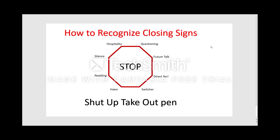You're going to use the objection triangle — covered in another video — which handles any type of objection thrown at you. And then there's nodding: if a person is nodding their head up and down, they're subconsciously already agreeing to what you're selling. You want to move them to the next step of the conversation — whether that's introduction, questioning, presentation, or the close. And with haters, they just hate their current product, so go in for the kill.